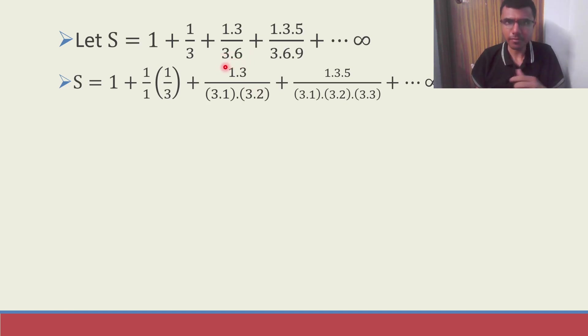This I'm going to write it as 3 into 1 and 3 into 2. So these 3s will be kept aside and 1 into 2 will be coming outside. And likewise, here I wrote 3, 6, 9 as 3 into 1, 3 into 2, and 3 into 3. So 1, 2, 3 will become outside and 1 into 2 into 3 is nothing but 3 factorial.